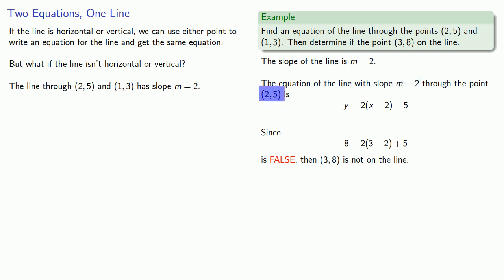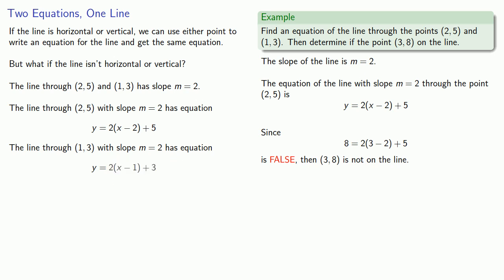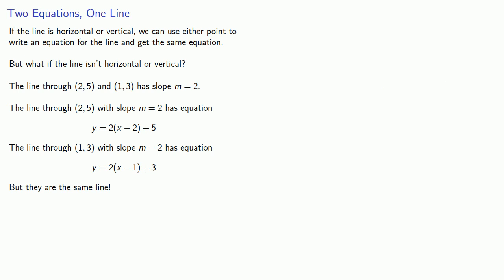But what if we used the other point, (1, 3)? We could still write down the equation of the line, but it looks different, even though they are the same line. And so the question we have to ask is: which one of these is correct? To answer that question, let's do a little bit of algebra.